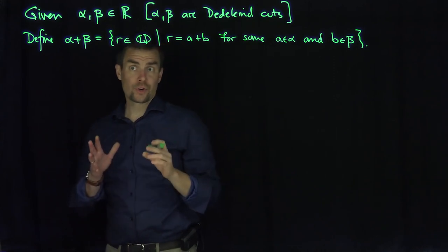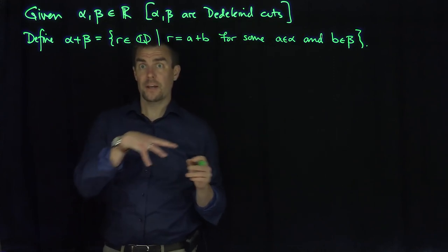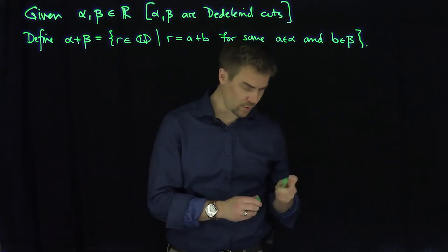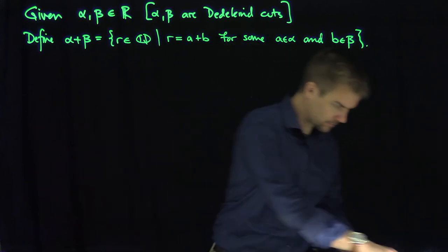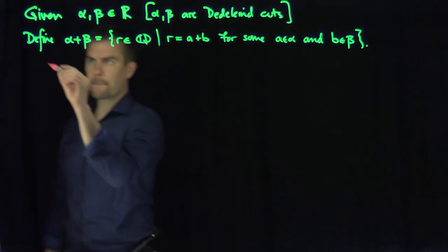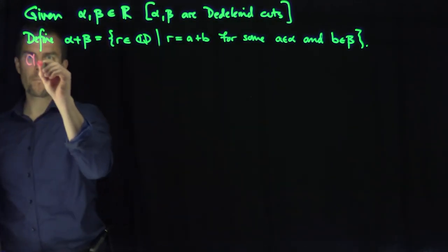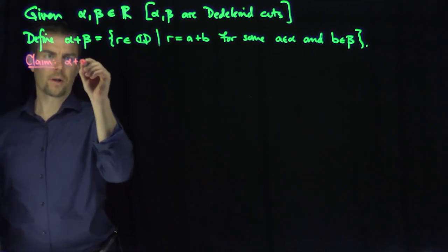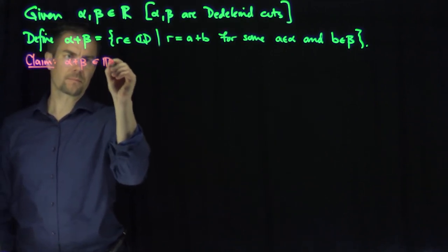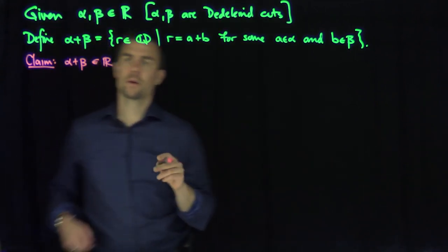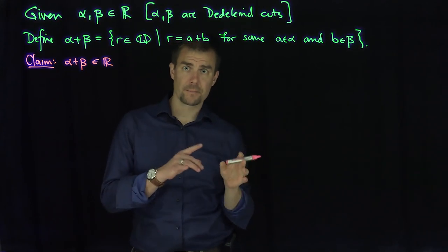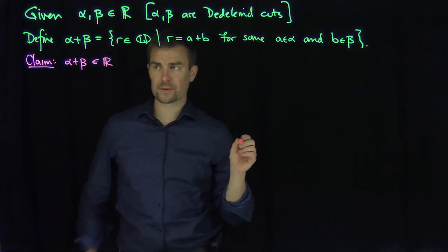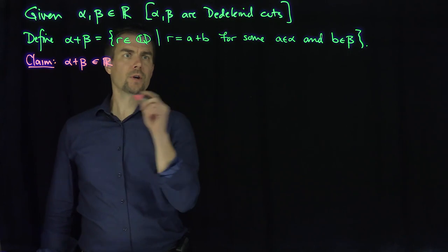Now I need to show that alpha plus beta is itself a Dedekind cut, or a real number. So let's do that. Claim: alpha plus beta is a real number. That's the first field axiom — that addition is a closed operation — so let's prove this.